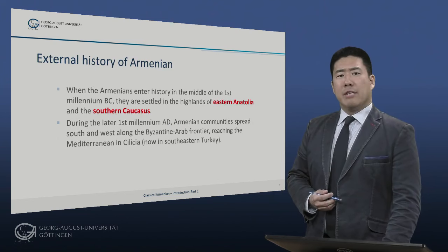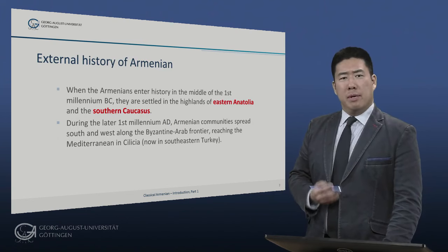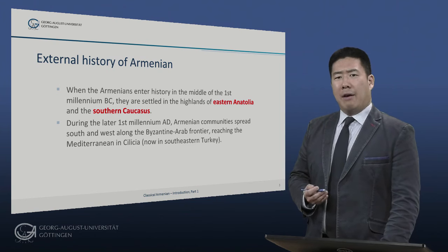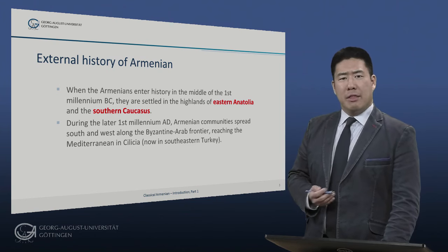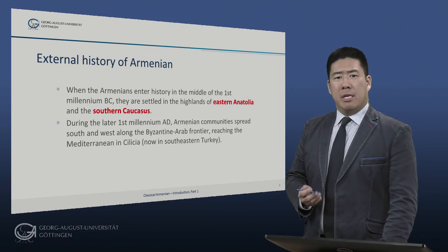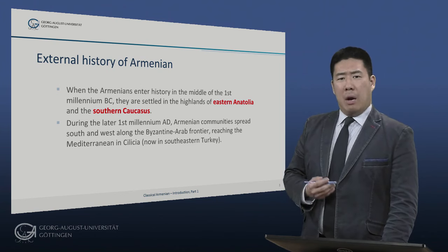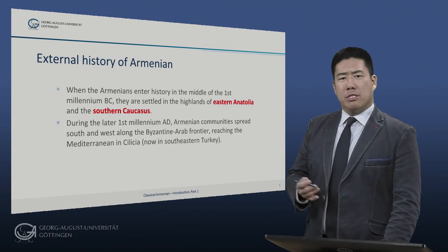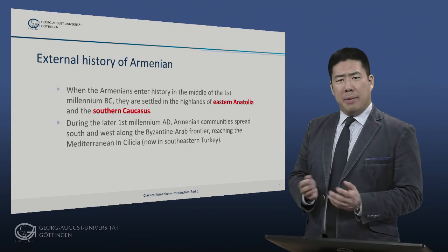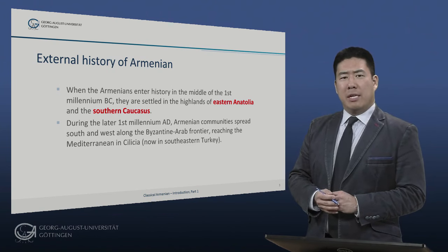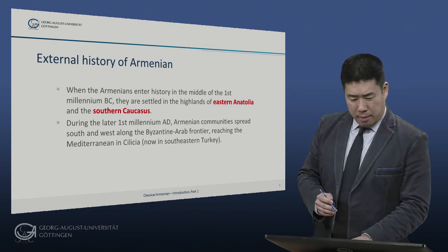When the Armenians enter history in the middle of the first millennium BC, they are settled in the highlands of eastern Anatolia and the southern Caucasus. During the later first millennium AD, however, Armenian communities spread south and west along what was at that time the Byzantine-Arab frontier, reaching the Mediterranean in Cilicia, now in southeastern Turkey.